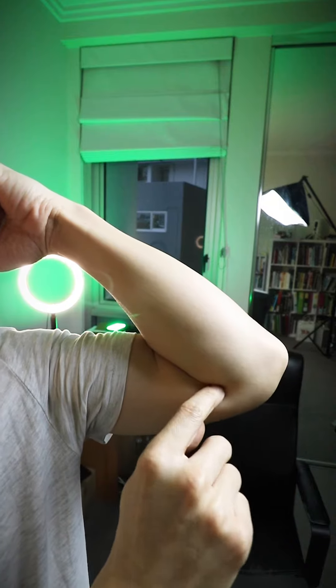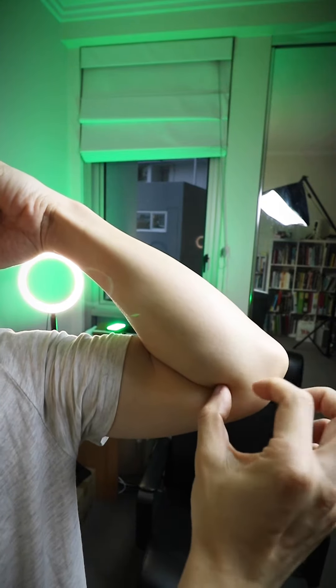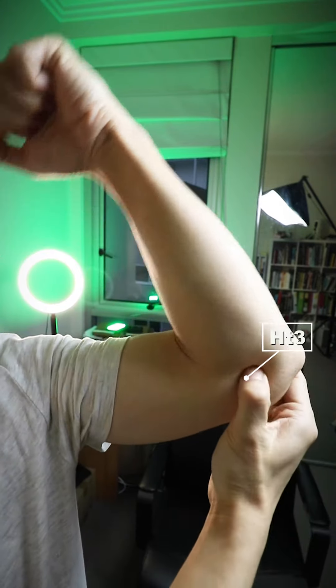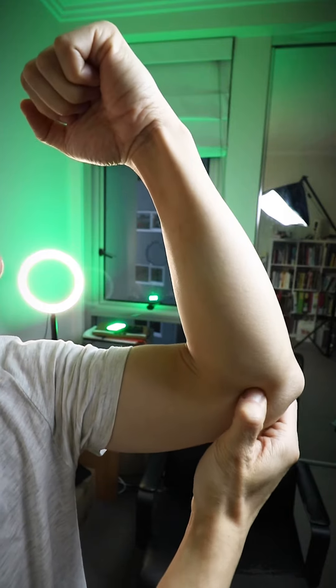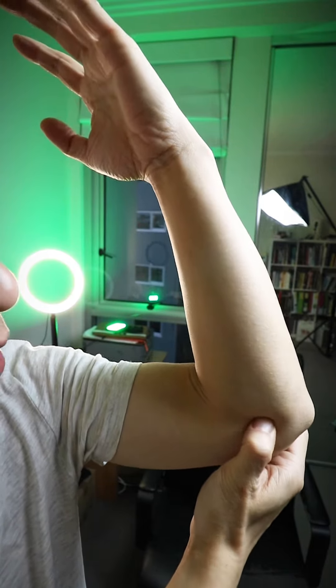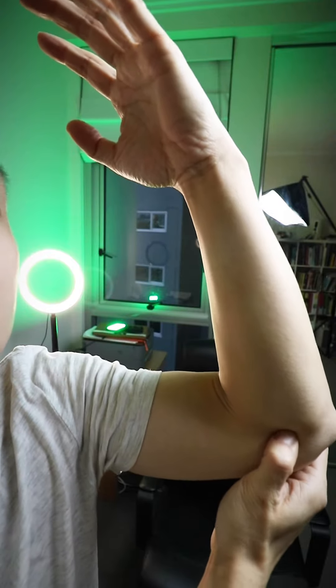That's the crease of where your elbow is, and this is the elbow tip right in between the center right here. This spot is called Heart 3. That's really great for knee pain, but also sinus issues and golfer's elbow.